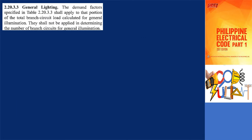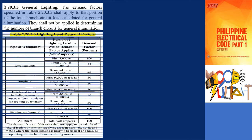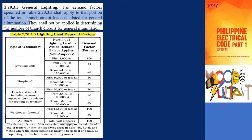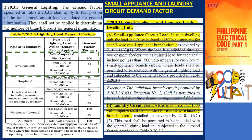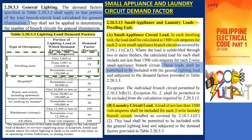Let's start with the general lighting load, as stated in section 2.20.3.3 general lighting, the demand factors specified in table 2.20.3.3 shall apply to that portion of the total branch circuit load calculated for general illumination. For dwelling units, we take the first 3,000 volt amperes at 100%, the range of 3,001 to 12,000 volt amperes at 35% demand factor, and the remainder at 25%. The small appliance and laundry circuits demand factor in sections 2.20.3.13(a) and (b) specifies that these loads shall be permitted to be included with the general lighting load and subjected to the demand factors in table 2.20.3.3.